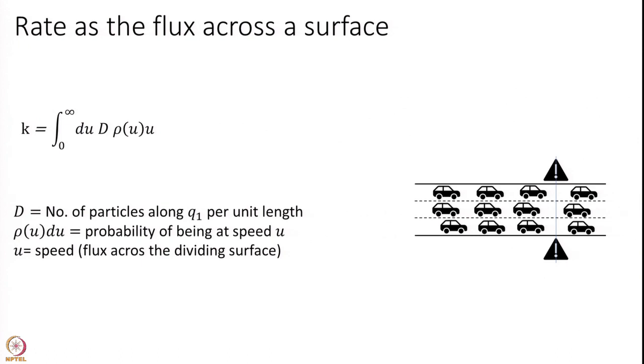I will go back several modules and what we discussed in one particular module is if you have a series of cars and the cars are going on some highway and I am standing at one given point and I am asking the question what is the rate at which cars will cross this dividing line. That we found is equal to this answer. This answer is the integral over all speeds, positive speeds, the density of cars multiplied by the probability that I am at that given speed.